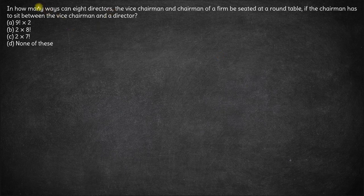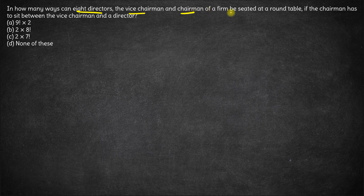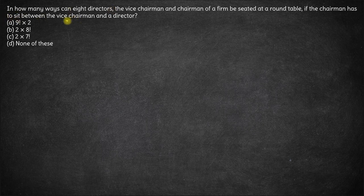In this question, we have: in how many ways can 8 directors, the vice chairman, and the chairman — so 8 plus 1 plus 1, total 10 people of a firm — be seated at a round table if the chairman has to sit between the vice chairman and a director?